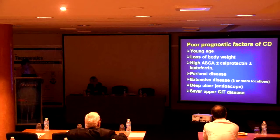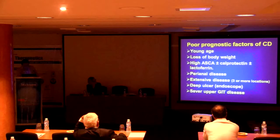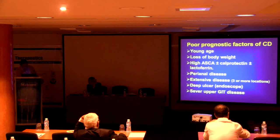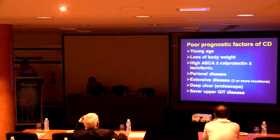We have poor prognostic signs for Crohn's disease. If found, they indicate poor prognosis and frequent relapses. These include: young age, loss of body weight, high ASCA, high calprotectin, presence of perianal disease, extensive lesions, three or more locations involved, deep ulceration on endoscopy, and severe upper GI disease.